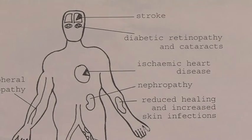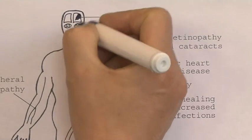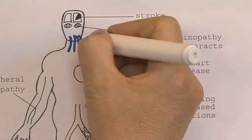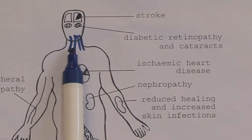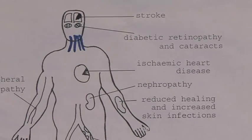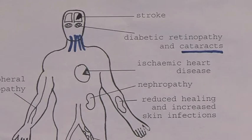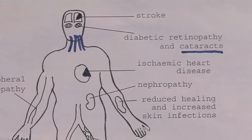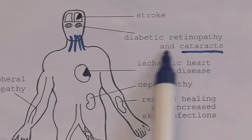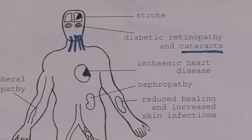This picture is an overview of some of the long-term complications of diabetes. There's an increased incidence of stroke because of the atherosclerosis that can develop in the large vessels supplying the brain. Diabetic retinopathy can occur, and cataracts are also more common in diabetes. Atherosclerosis in the coronary arteries means that ischemic heart disease, leading to complications such as myocardial infarction, is actually the most common cause of death in diabetes.